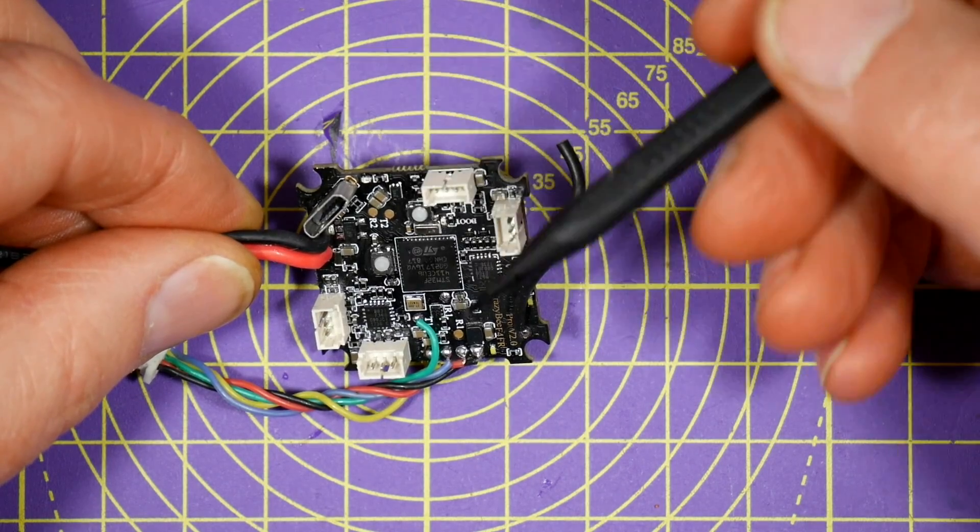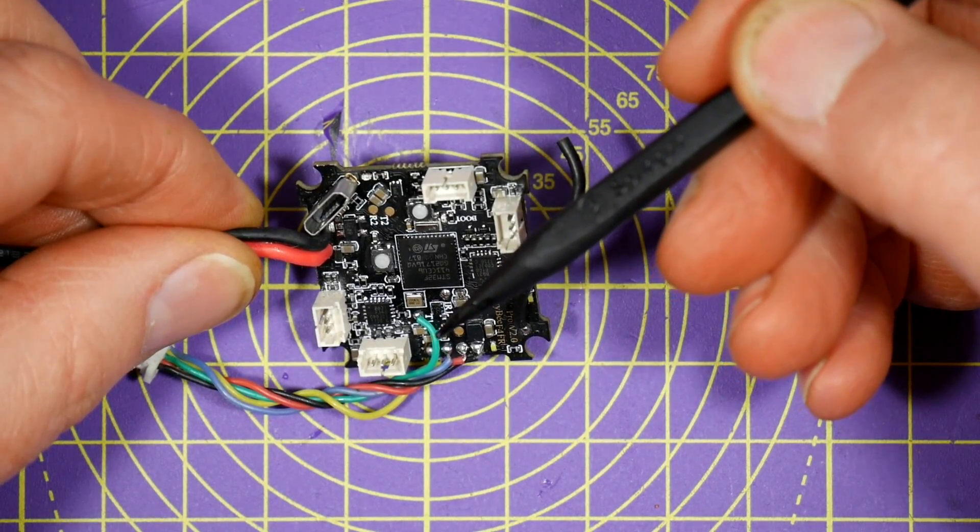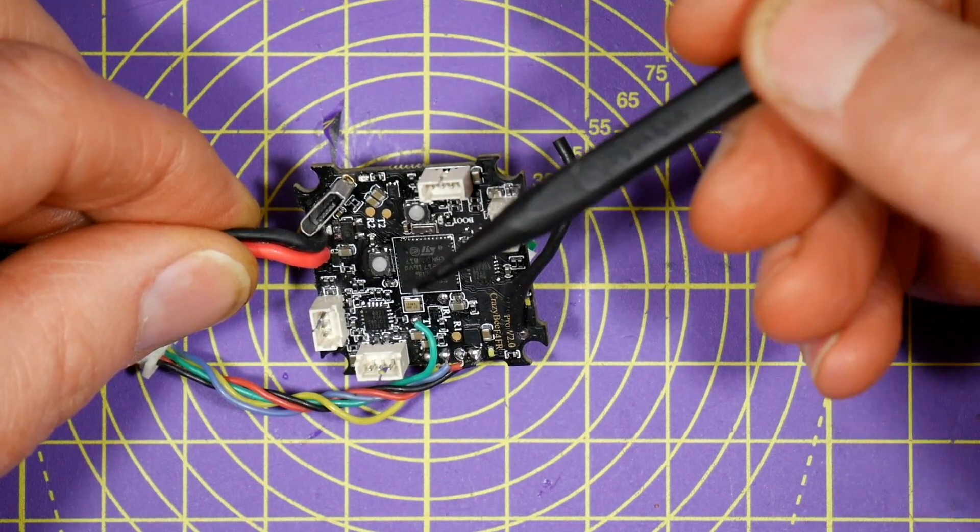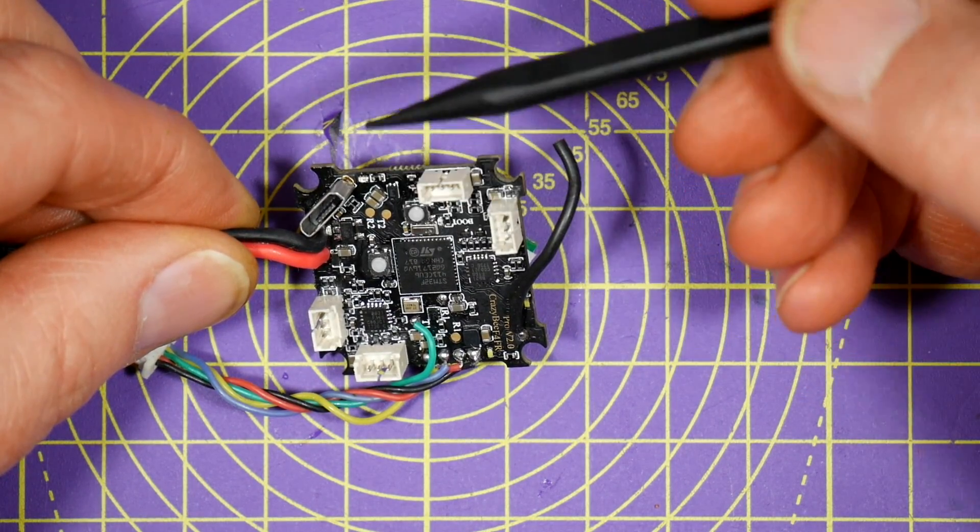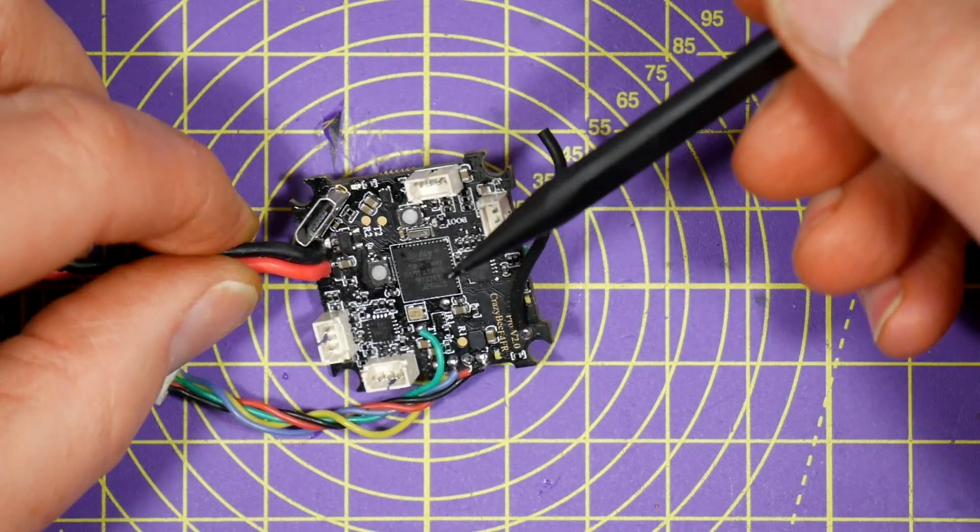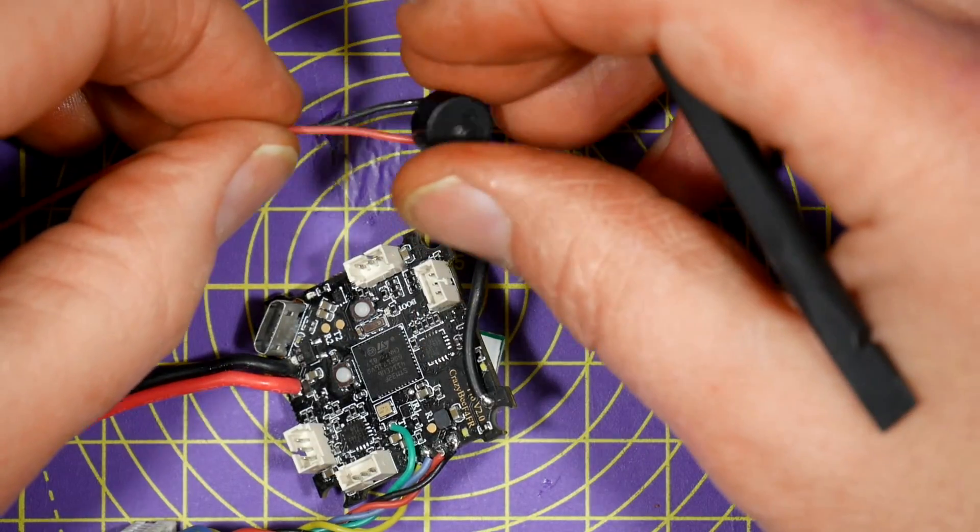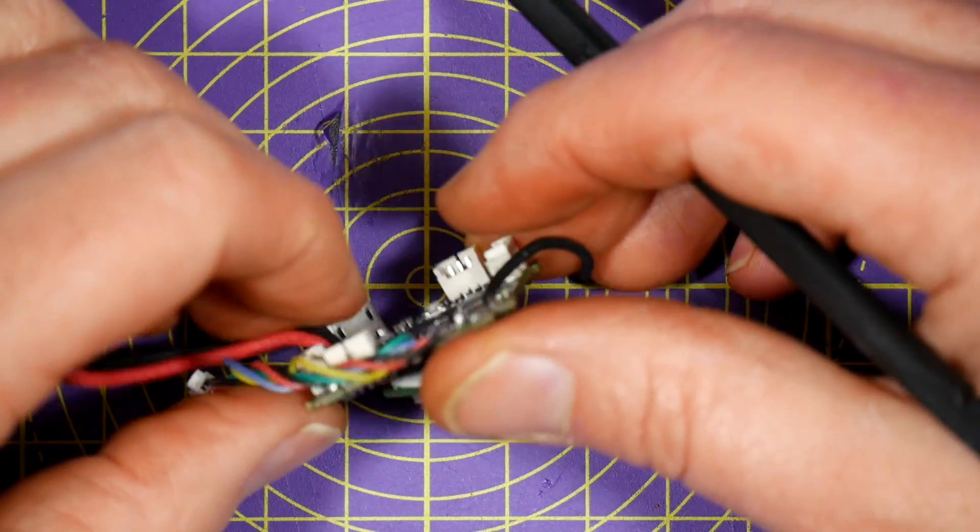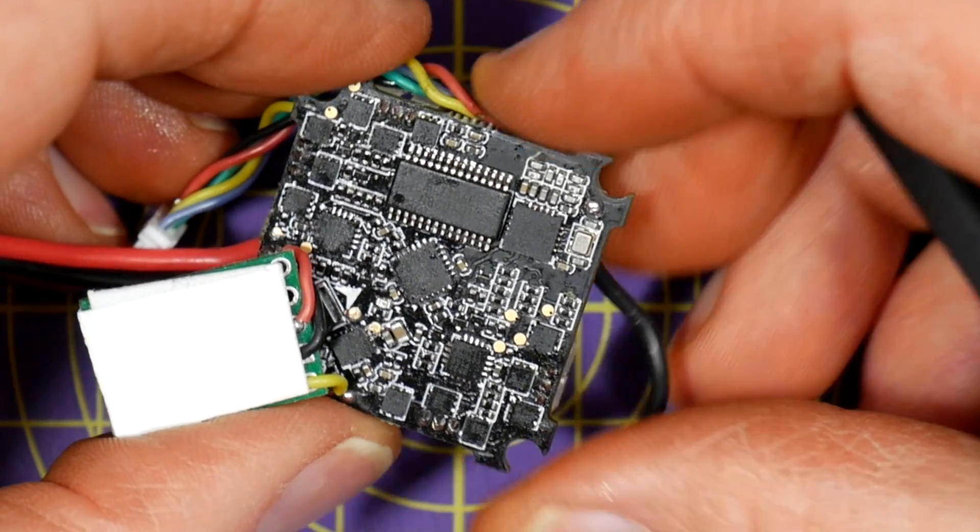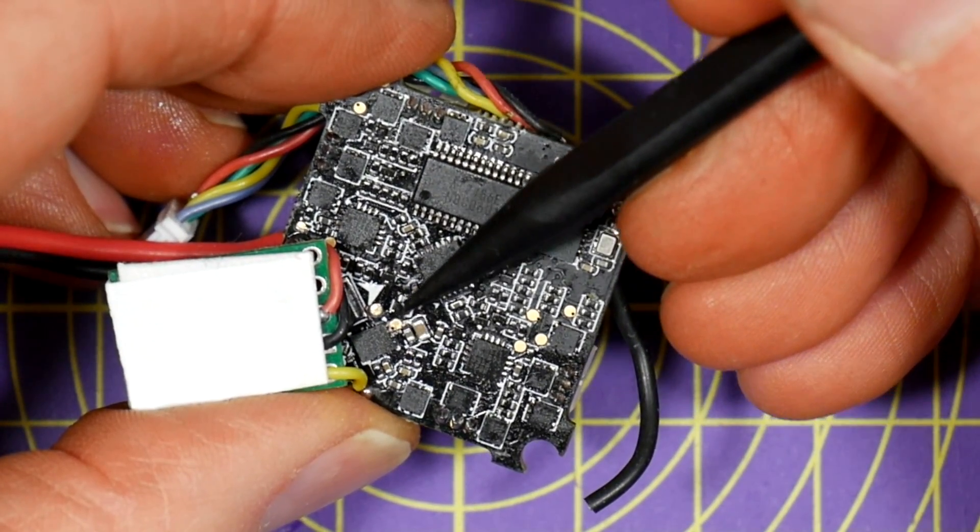One of the other problems with this quad that I pointed out in my review is that it doesn't have a buzzer, and finding this in long grass can be tricky. Even the Mobula 7 non-HD version had a buzzer. So we're going to wire in this small buzzer onto the board. Basically there are two pads just under here, there and there.